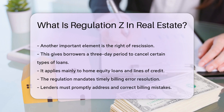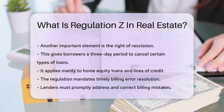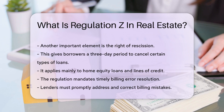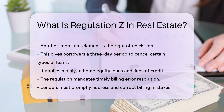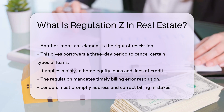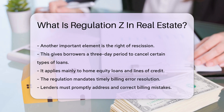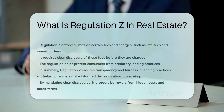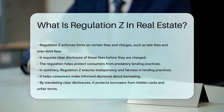Regulation Z enforces limits on certain fees and charges. For example, it restricts late fees and over-limit fees. It also requires clear disclosure of these fees before they are charged. This regulation helps protect consumers from predatory lending practices.